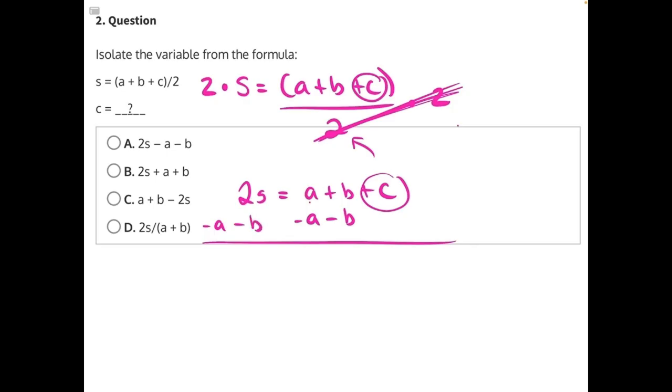Positive and negative a and b will just cancel themselves out, leaving us with 2s minus a minus b is equal to c.